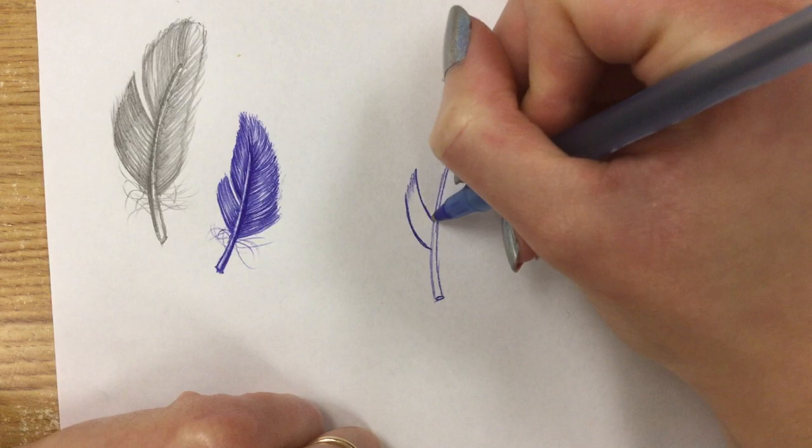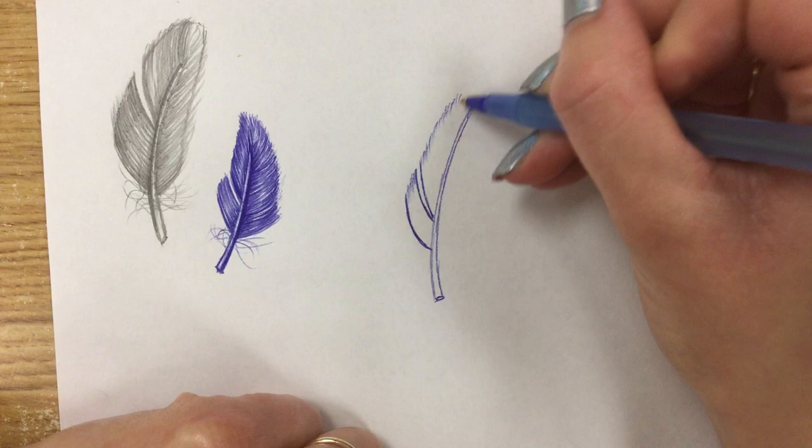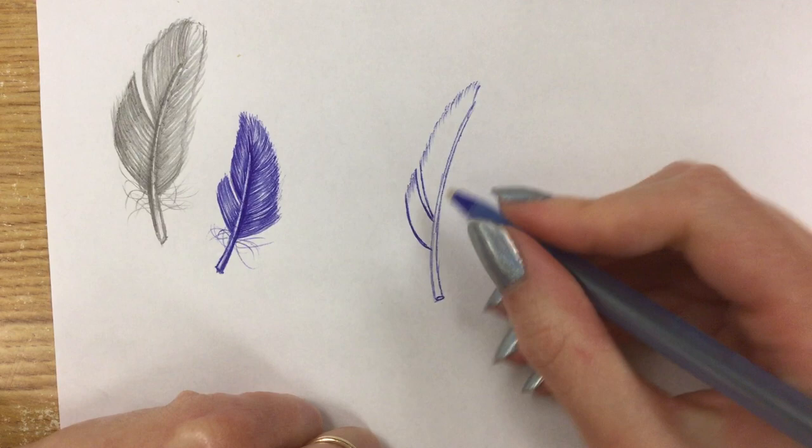And I'm gonna put a little gap in my feather because a lot of feathers that you see outside tend to have those little gaps in there. So I'll give it a gap and then I'll go back to my outline. Now this feather is taking shape to be a pretty even feather, so that's pretty cool.